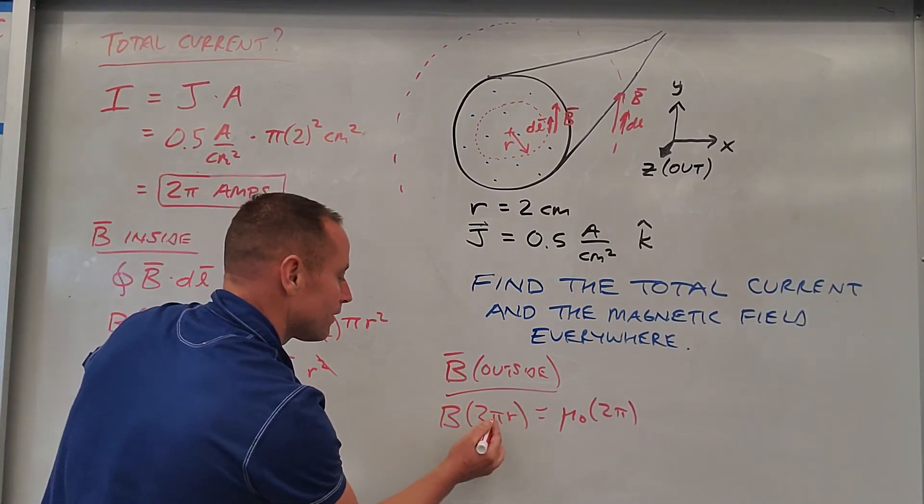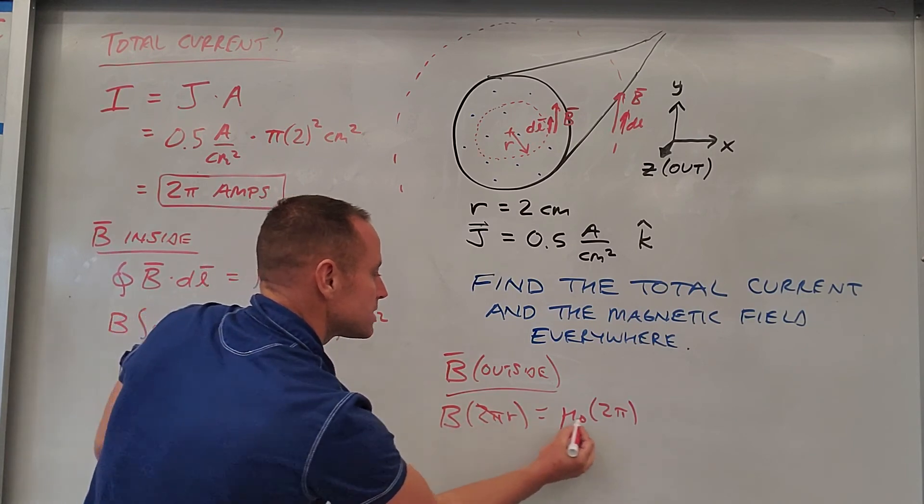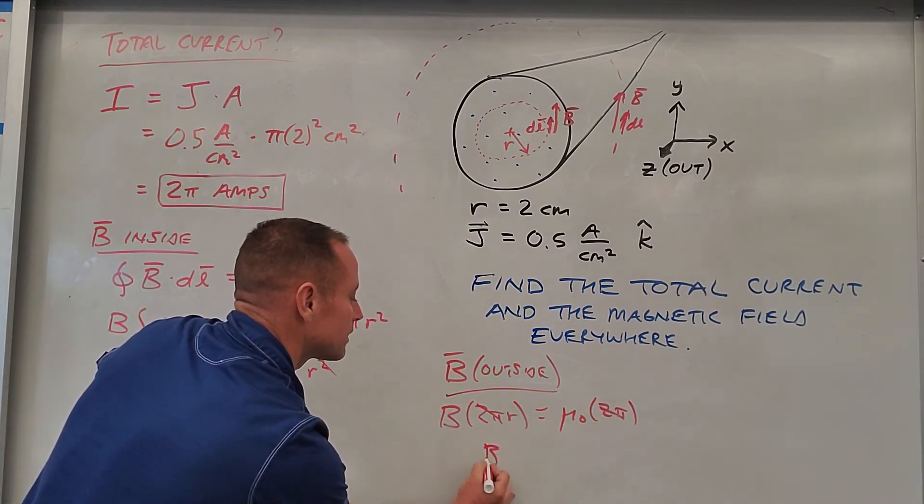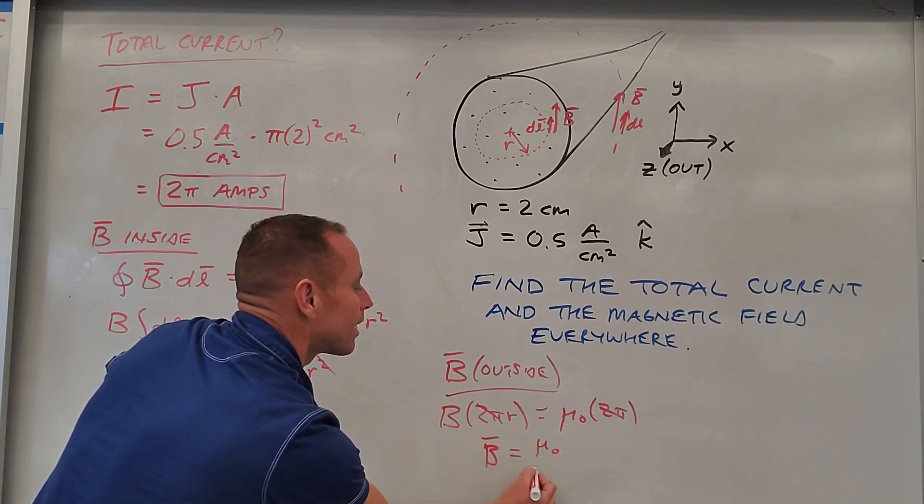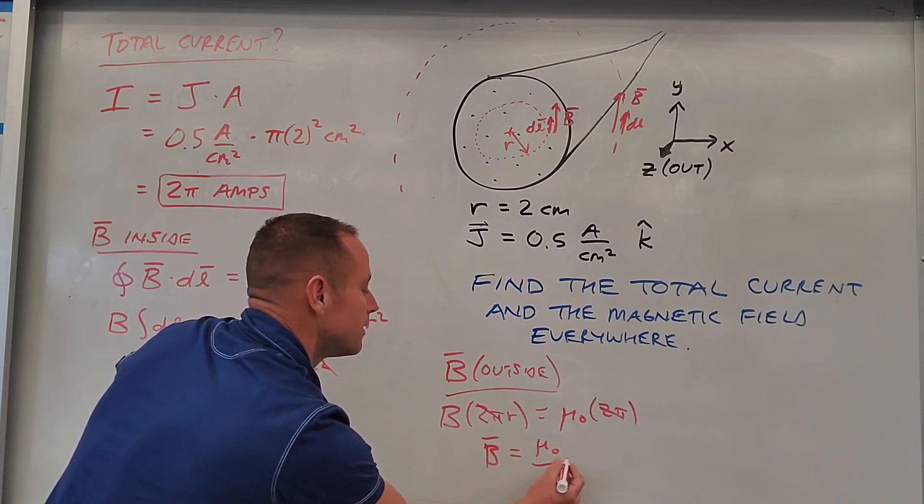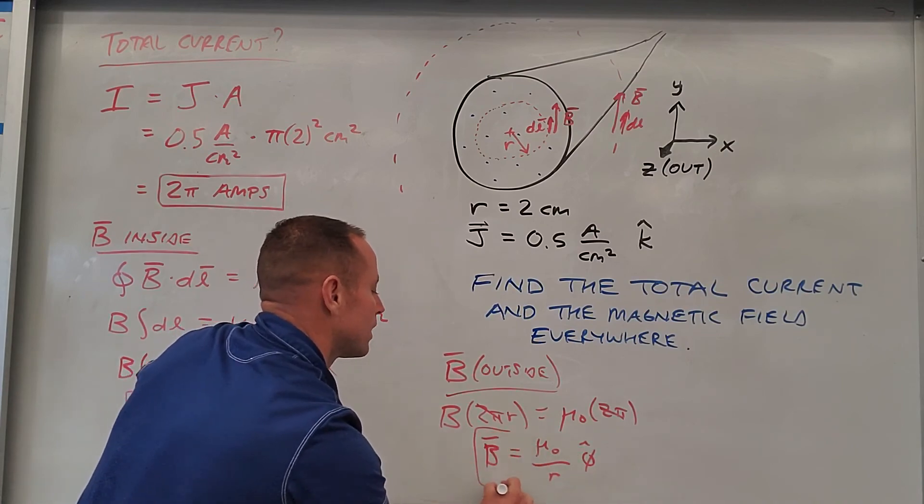And so now we can just straightaway solve for the field. So the 2π just slashes away and we get that the magnetic field is going to be μ₀/r. It's going to fall off like 1/r and again be in the φ̂ direction, meaning pointing